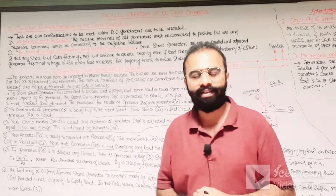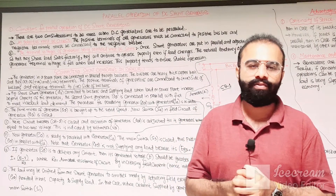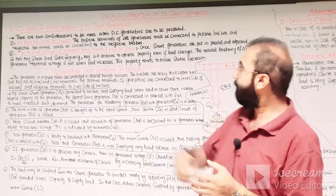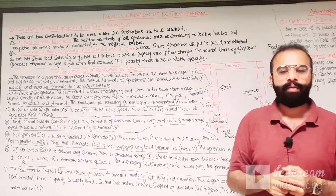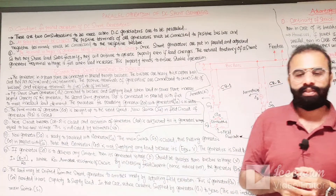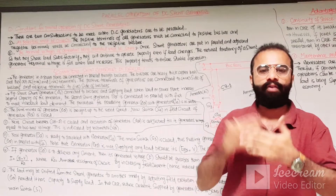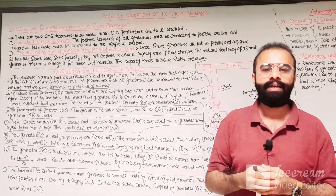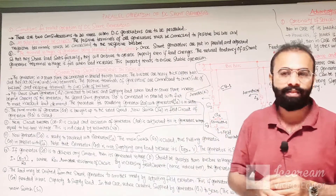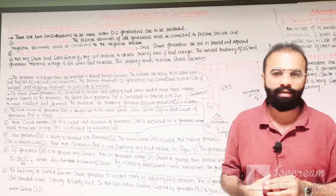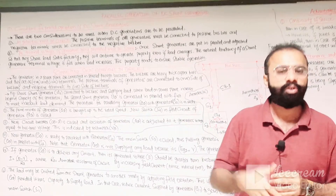As-Salaam-Alaikum dear viewers. Shwebim Baddaw is here with another lecture on electrical machines, and today we are going to discuss the parallel operation of DC shunt generators. The parallel operation of DC shunt generators can be defined as when two or more generators are connected in parallel with the bus bar so that their polarities must be the same and their terminal voltages from the generators and the bus bar must be the same.